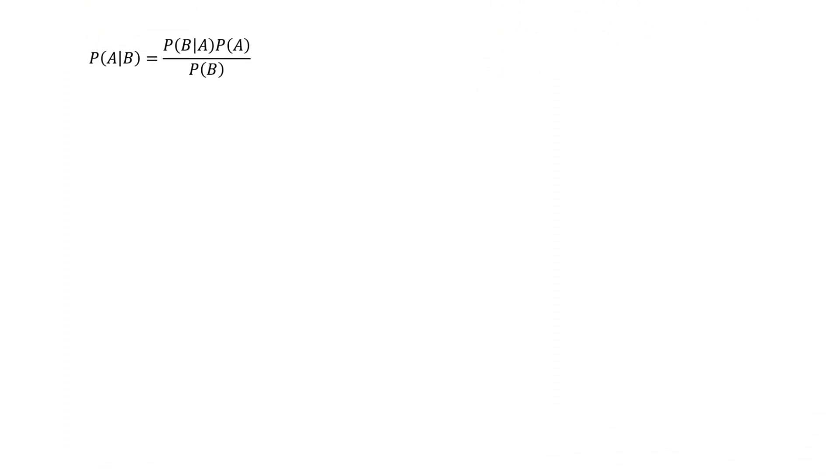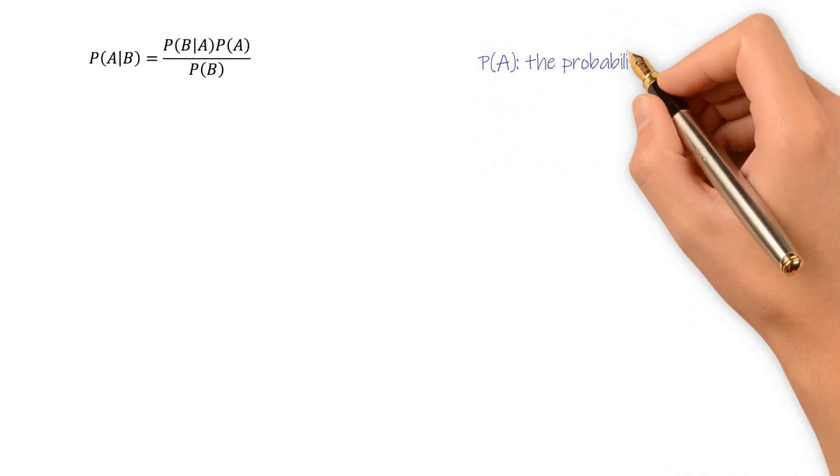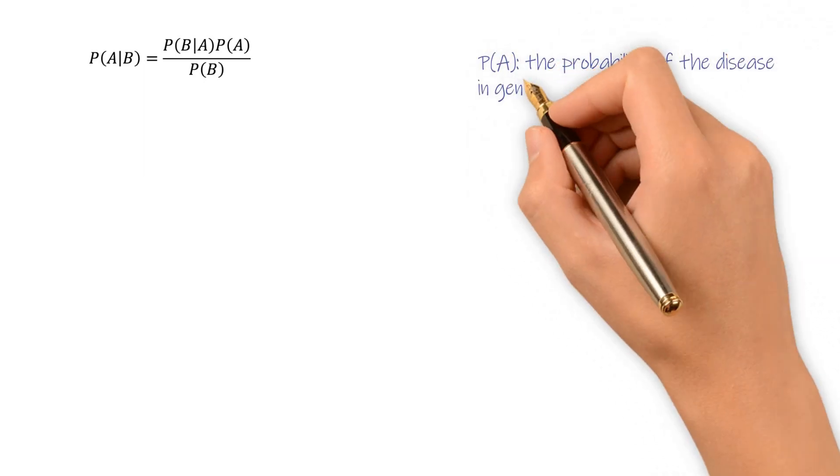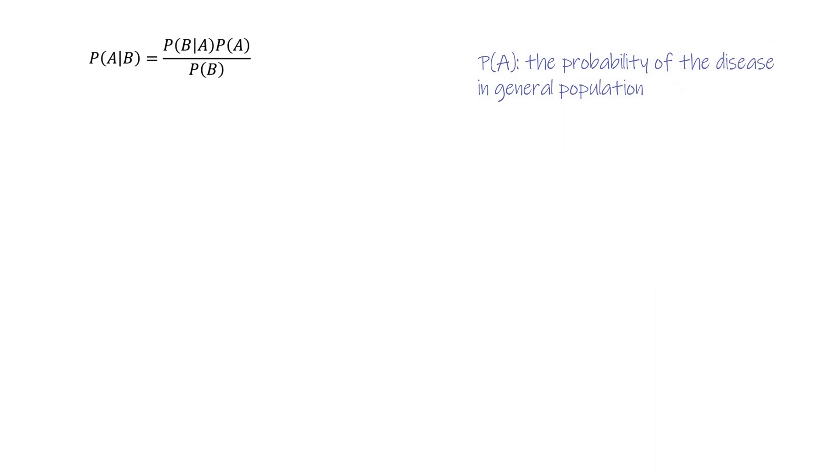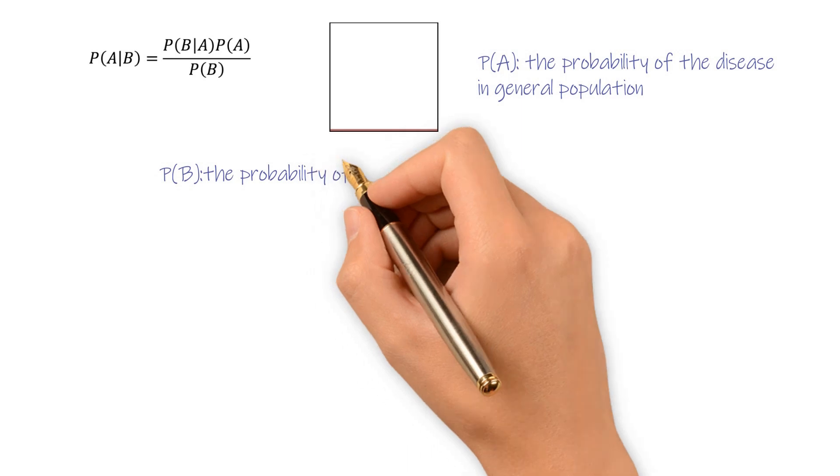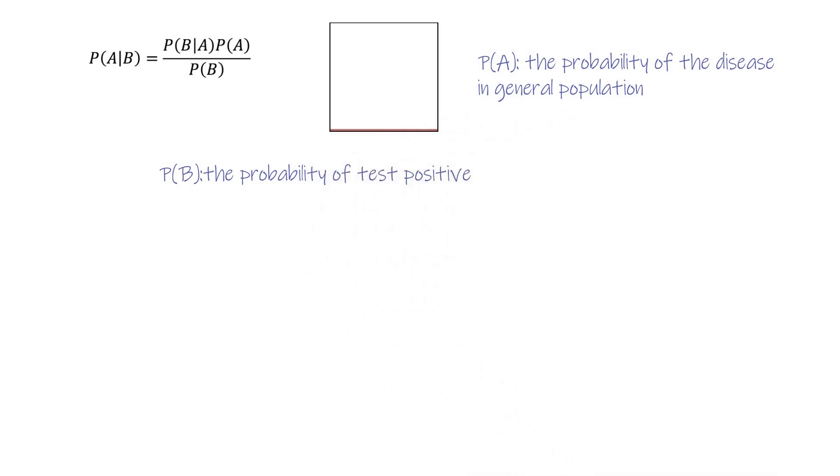Back to the question we asked at the beginning. Using Bayes' probability, P(A) is the probability of this disease in general population. P(B) is the probability of test positive. Now, let's put these two diagrams together.